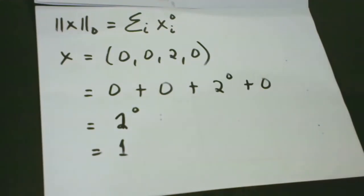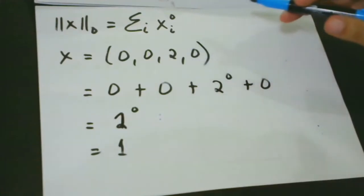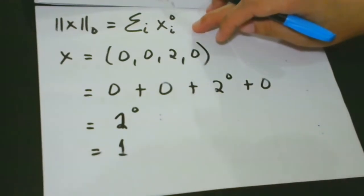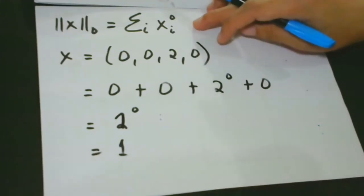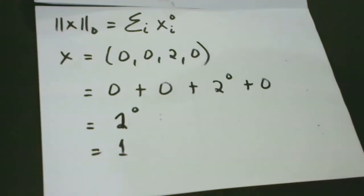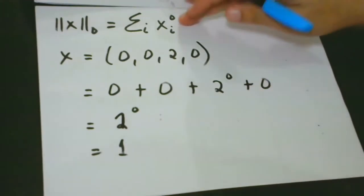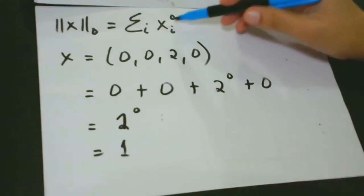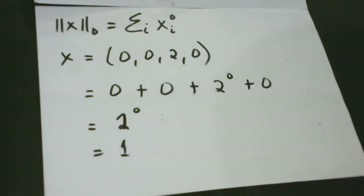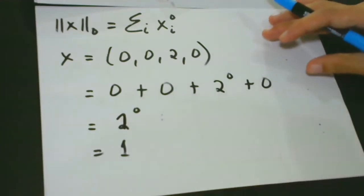Let's start with L0, or the zero norm. This is actually not a norm. The reason is that the number of non-zero entries in a vector is not a norm, because when we scale a vector by a scalar A, it does not affect or change the number of non-zero entries. This can be computed using the formula: summation of X sub i raised to the power of zero.